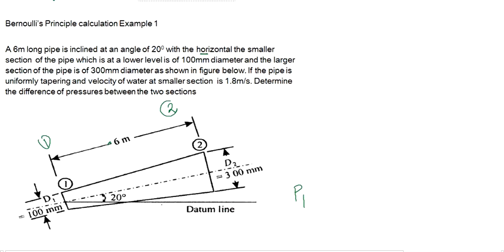A 6 meter long pipe is inclined at an angle of 20 degrees with the horizontal. The smaller section of the pipe which is at a lower level is of 100 mm diameter and the larger section of the pipe is of 300 mm diameter as shown in the figure below. If the pipe is uniformly tapered and the velocity of water at smaller section is 1.8 meters per second, determine the difference of pressures between the two sections.